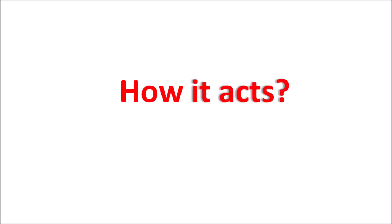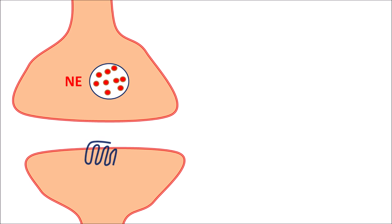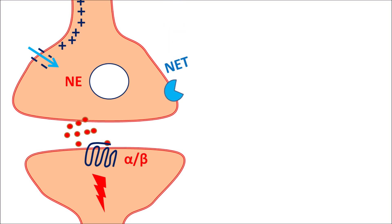Now let us see how this drug acts. Even though the exact mechanism of MPH is unknown, it mainly acts by increasing the transmission of norepinephrine as well as dopamine. Within the CNS, norepinephrine acts as an important neurotransmitter on presynaptic neurons. On postsynaptic neurons, adrenergic receptors such as alpha or beta receptors are located. When an action potential reaches the presynaptic neurons, calcium enters to produce calcium-mediated exocytosis, releasing norepinephrine to act on alpha or beta receptors. The action of released norepinephrine is controlled by its reuptake via the norepinephrine transporter.